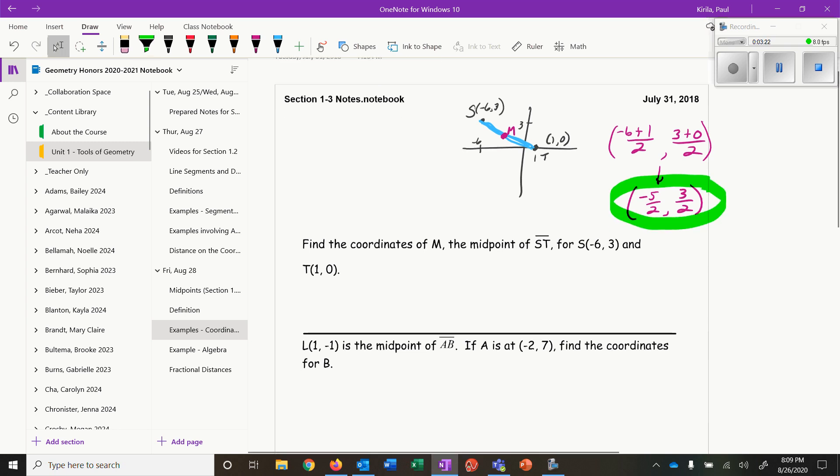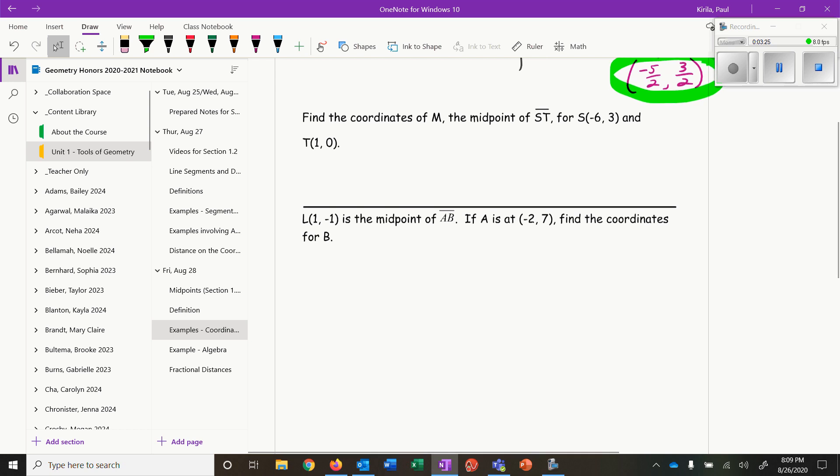Very similar to what I did in the last video. More challenging is when I tell you the coordinates of the midpoint, I tell you one of the endpoints, and we have to find the other endpoint. So L is at (1, -1) and that is the midpoint of segment AB. A is at (-2, 7) and I want to find the coordinates for B. Again there's no picture so I'm going to start by sketching a picture. I have (1, -1) so here is L. A is at (-2, 7).